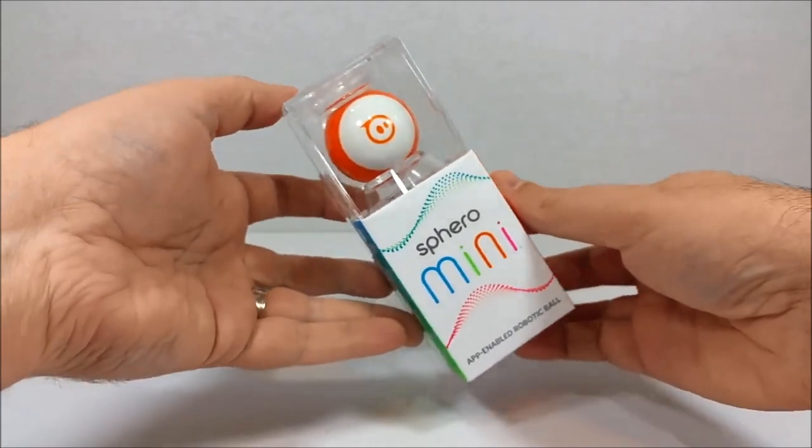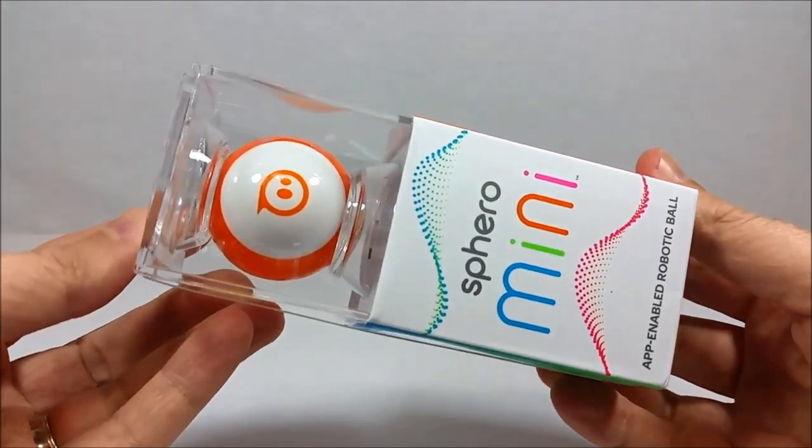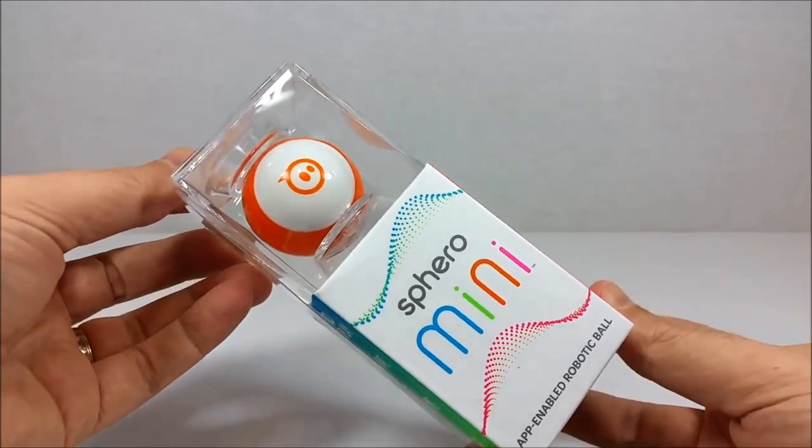Hey everyone, Leo Bond here. I'm back again today for the Best Buy Canada blog and this time I'm looking at an all-new Sphero robotic ball called the Sphero Mini.